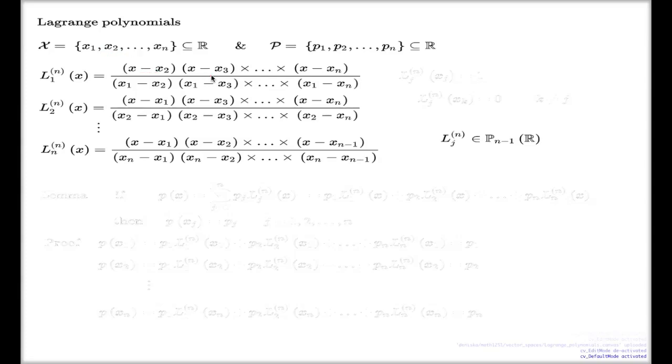So, the Lagrange polynomials, it's a wise construction. It's not like you can't come up with this incidentally. That's why we have a name next to it. It's a polynomial which gives you 1 on one value from this set, and 0 on any other value from that set.